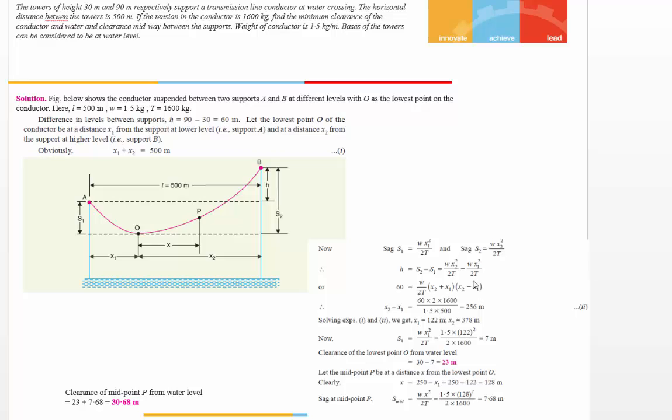Since x1 + x2 = 500 and x2 - x1 = 256, from this you can calculate x1 and x2. Once you calculate x1 and x2, substitute the values in s1 and s2.